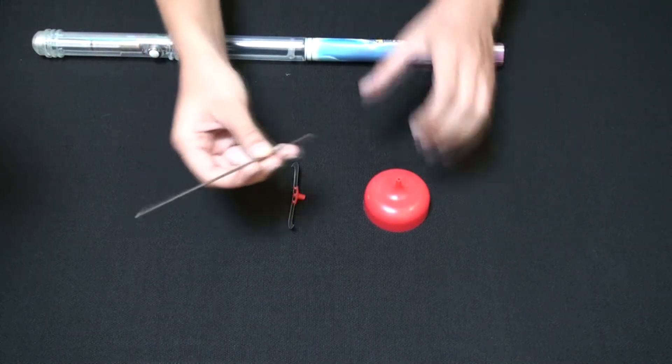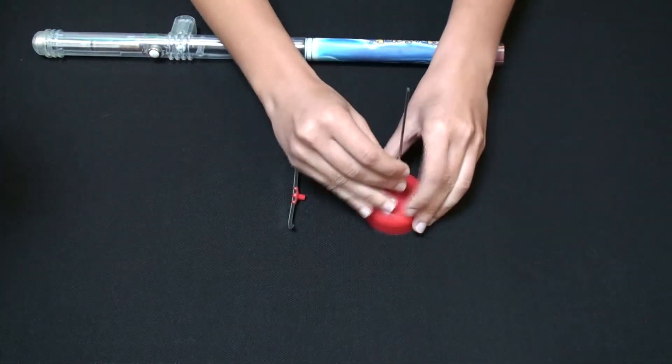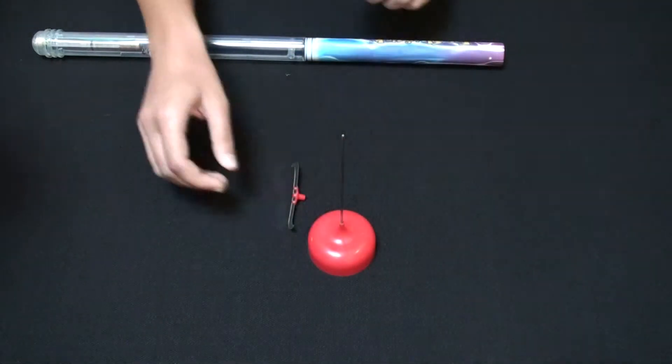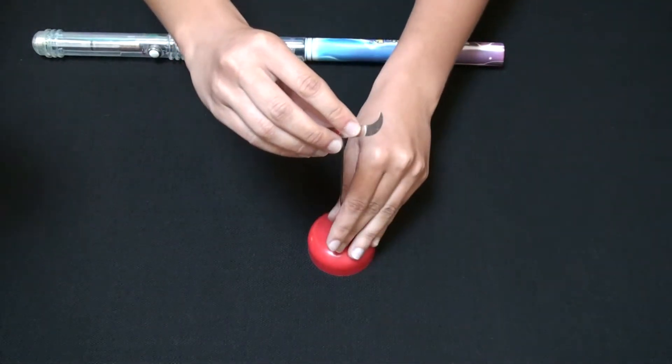Insert the pin into the plastic pin holder. Put the silver z-spinner at the top of the pin.